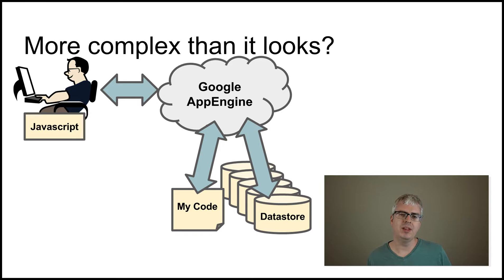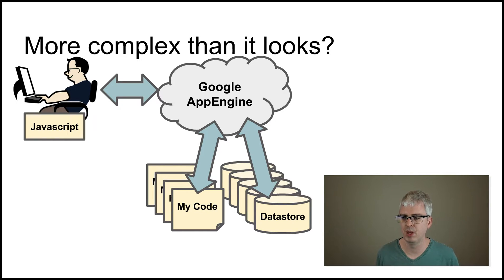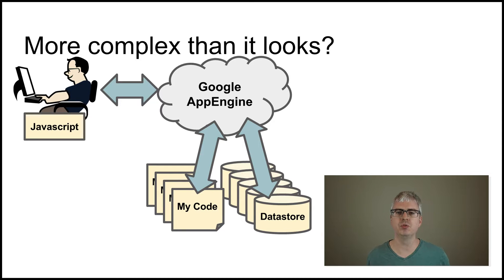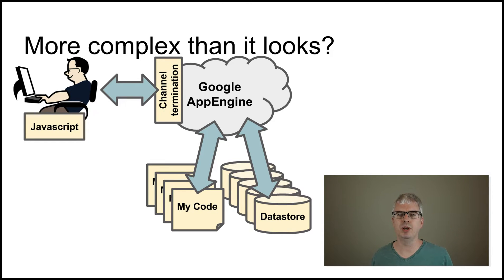The data store database is a highly reliable store for our messages — it's replicated across many hard drives and many machines, and it has fault tolerance and failover and all those good things. Our code is executed in a scalable and fault-tolerant way as well. The App Engine infrastructure runs multiple copies across multiple machines, spinning up more copies if the load demands it and turning them down as load goes away. The infrastructure also provides a channel termination mechanism that allows each browser to maintain an open connection back to App Engine and receive chat messages as they come in.